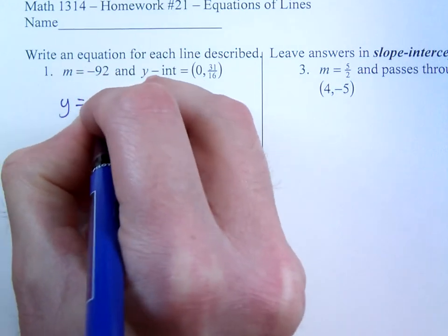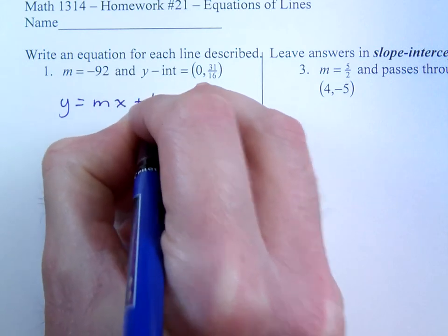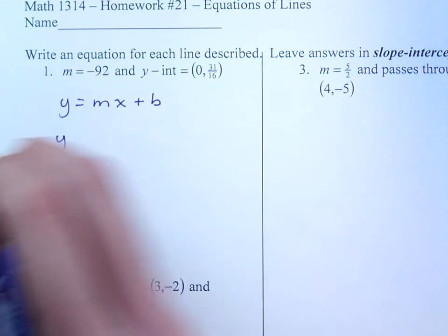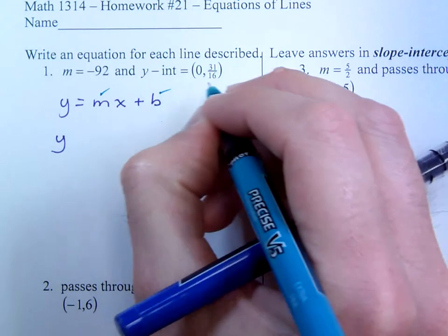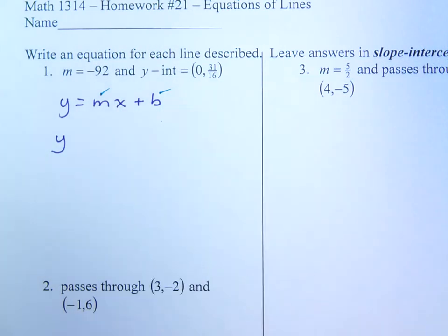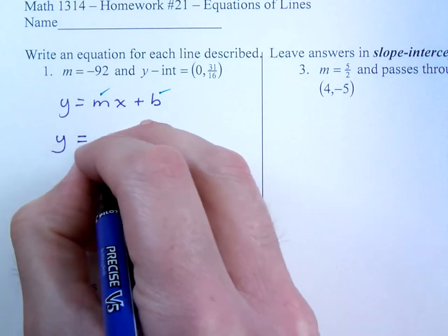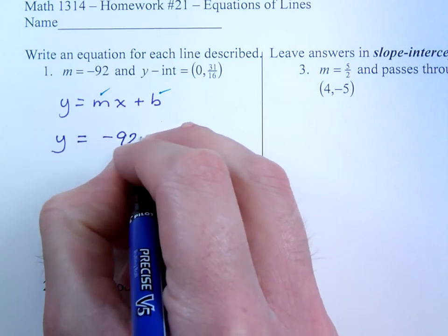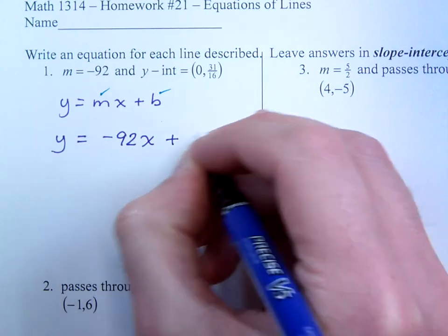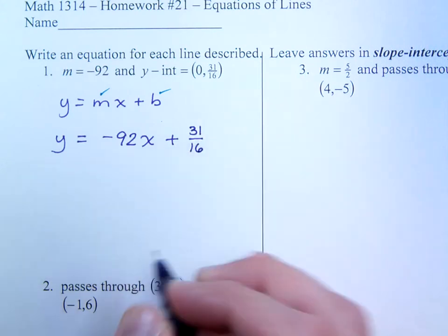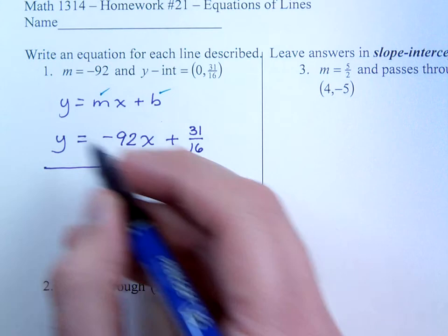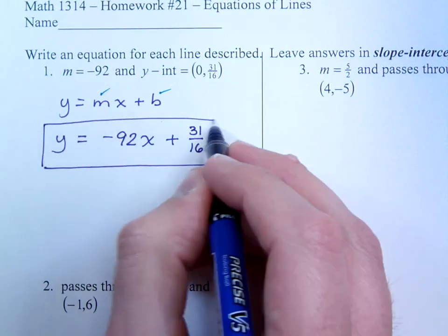Remember that y equals mx plus b is a great form to work with. Note that you already have your slope and you already have your b for the y intercept. So it's just a matter of writing that in here. So that's negative 92x plus the b value is 31 over 16. And there really is not much to that one.